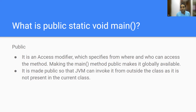Similarly, public specifies from where and who can access — like a bank account you can access from anywhere on your mobile, but only you are authorized to do so. We are making the main method public so that it is globally available and JVM can invoke it from outside the class, since JVM is not present in the current class.